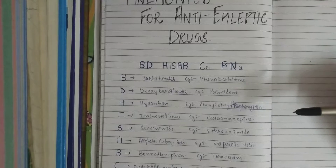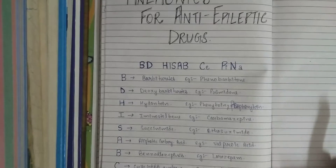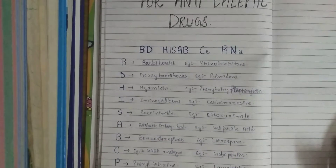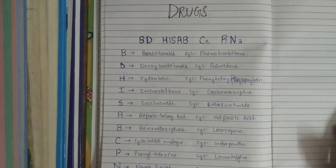H stands for hydantoin, for example, phenytoin and fosphenytoin. I stands for iminostilbene, for example, carbamazepine.